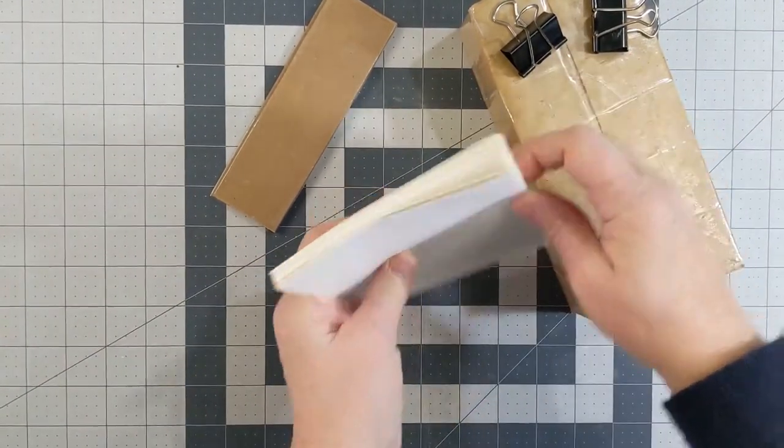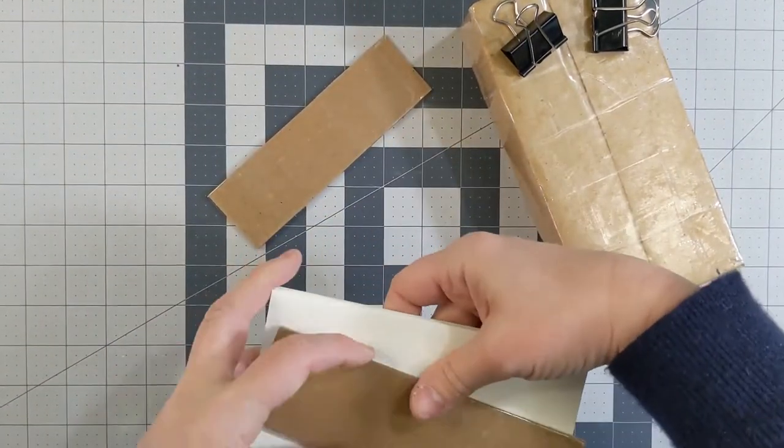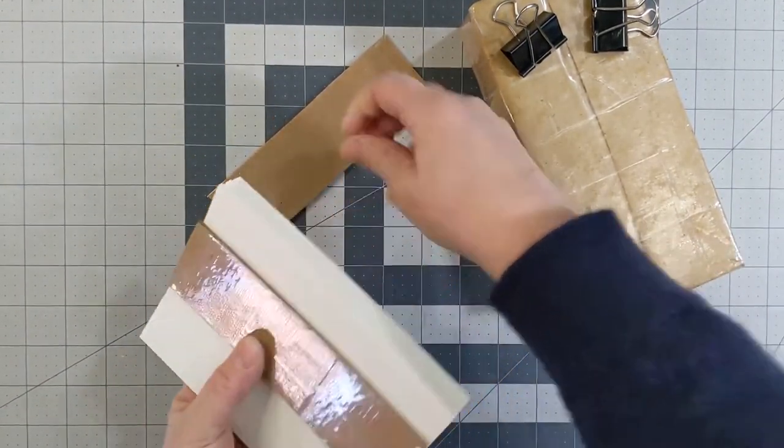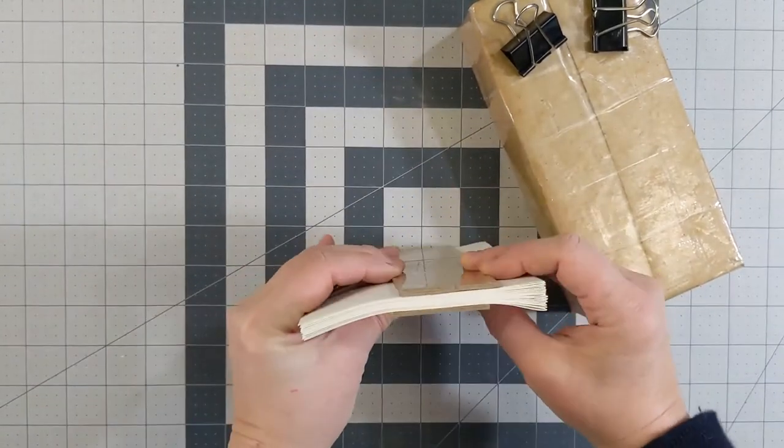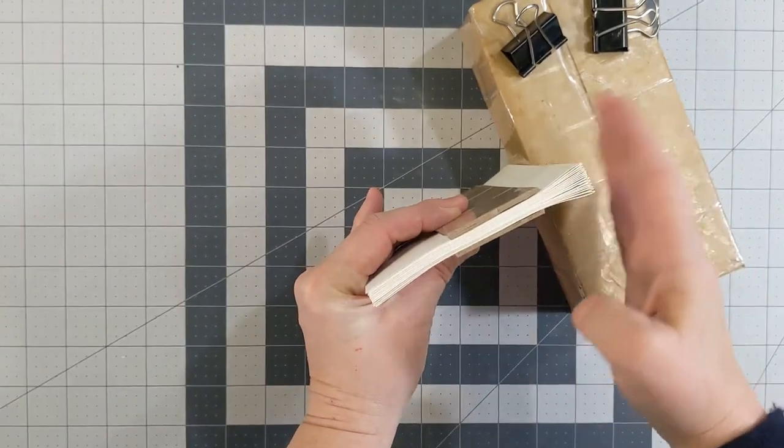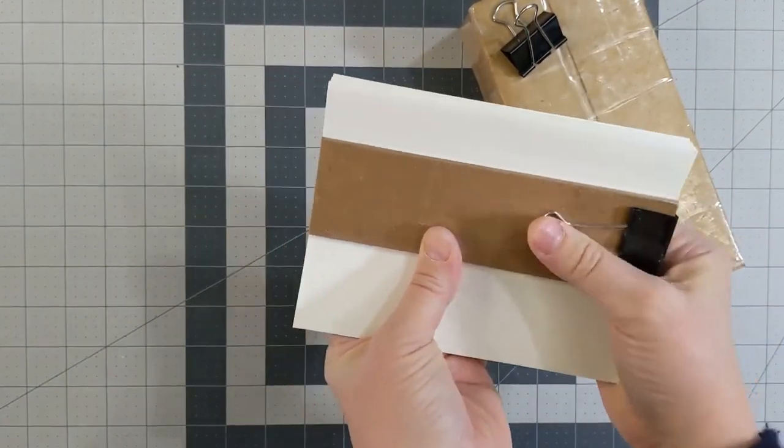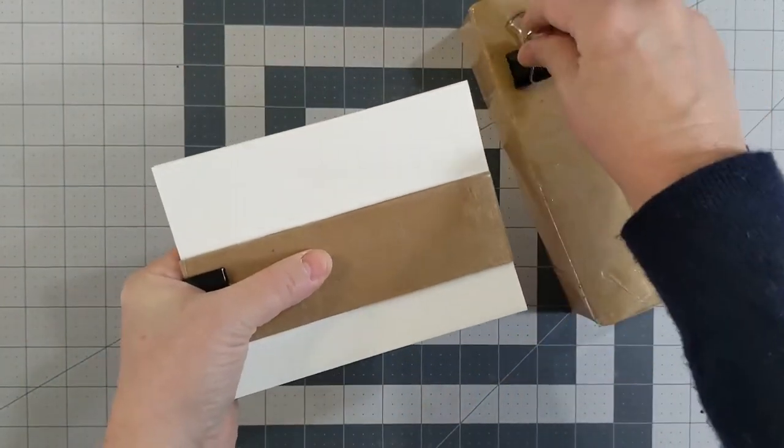Using a 90 degree angle like the table surface in this brick, line up the text block with the spine edge and the top edge to make sure that your block is square. Then take the two boards that you're going to be using as a press and place them about an inch to an inch and a half away from the spine edge and put binder clips on them.